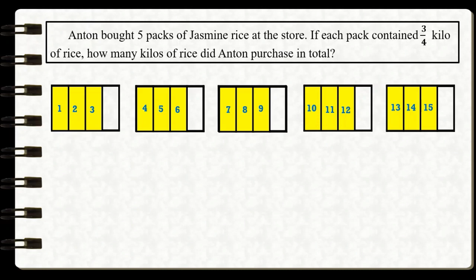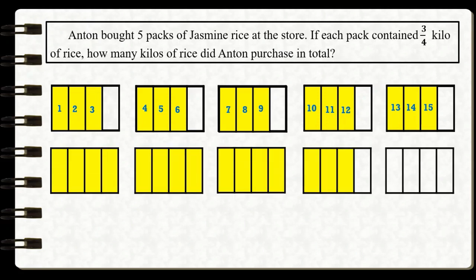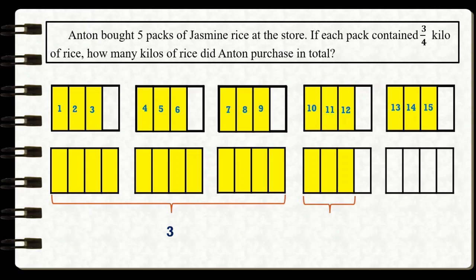Now we are going to combine all of the shaded parts. We draw a similar number of rectangles and combine all 15 shaded parts. As you can see, there are three rectangles that are full — equivalent to three whole packs — and another pack that contains three-fourths kilo of rice. So in total, Anton bought three and three-fourths kilos of rice.